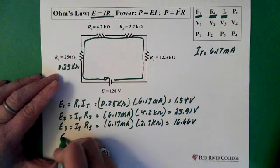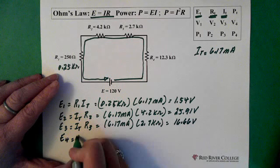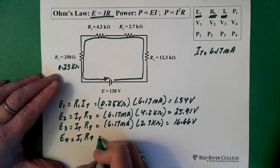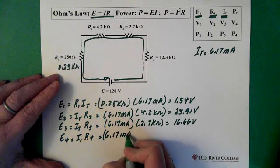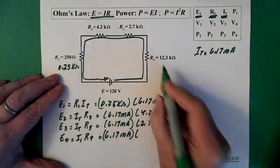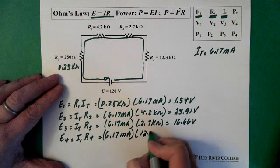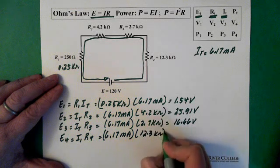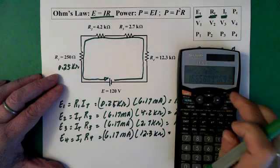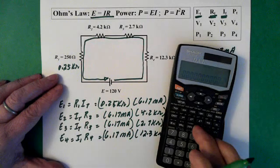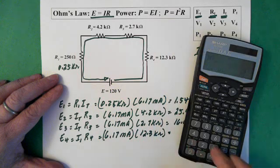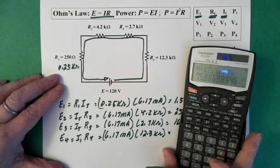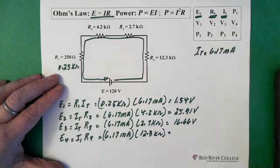And E4. I total times R4, 6.17 milliamps. And a big resistor here, 12.3 kilohms. Recall our current and multiply it by 12.3 exponent 3 equals 75.89 volts.